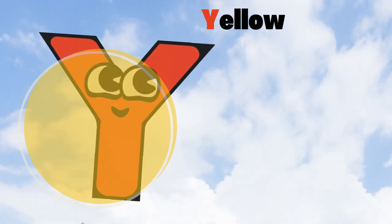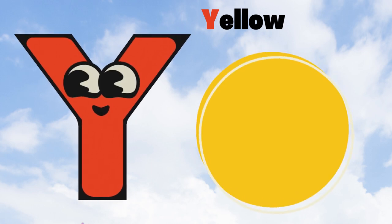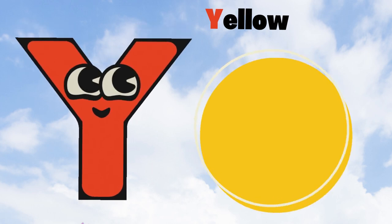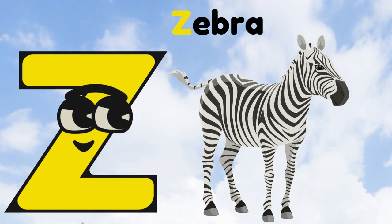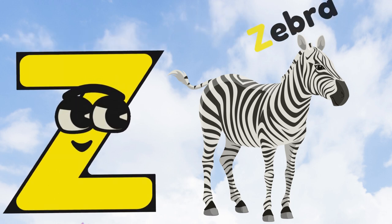Y is for yellow, ye-ye-yellow. Z is for zebra, z-z-zebra.